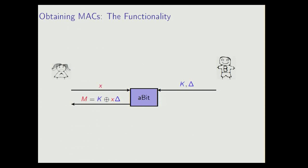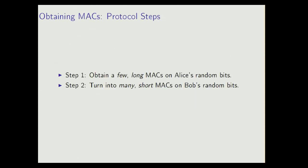How do we get such a MAC? This is the functionality we want. It's pretty simple. We call it an A-bit because it authenticates bits. We want something where Alice inputs x, Bob inputs a local key and a global key, and then we just get out the MAC like I defined it before. And we want to implement really a lot of these guys. These are the two steps of the protocol that implements this. First we obtain a few, very long MACs for Alice's random bits, and then we're going to turn this into a lot of short MACs on Bob's random bits. And this is where we use this OT extension thing of Ishai et al. It's something very similar to their protocol.